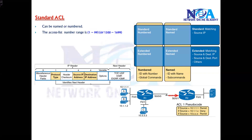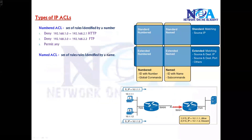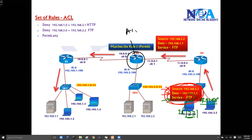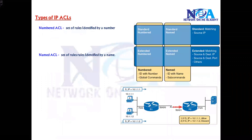The specialty of standard ACL is that it filters based on the source address only. When a packet comes, it has a source address, destination address, whether it is TCP or UDP protocol, and port numbers like FTP or Telnet traffic. But when you have a standard ACL implemented, the router checks only the source address — it will not check the destination address or the service.